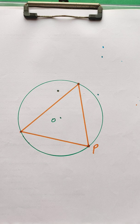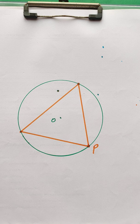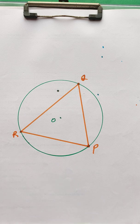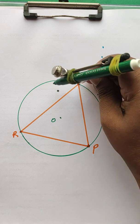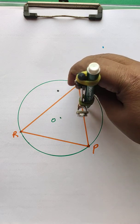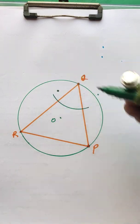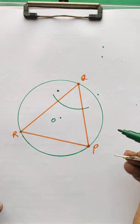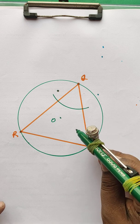Now I will fix a radius and draw an arc from point Q, because I need to draw a tangent at point P. I'll keep the pointer at P and cut an arc. I got the arc, which is intersecting at two points.